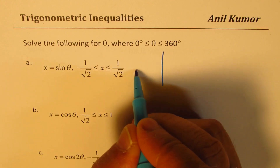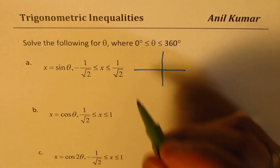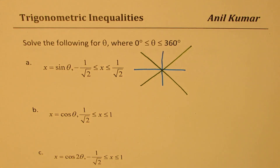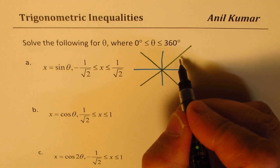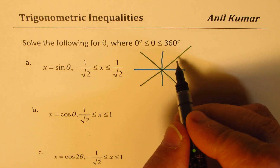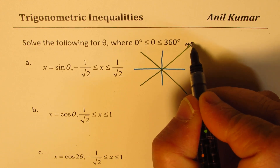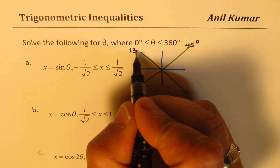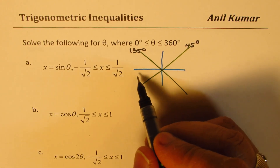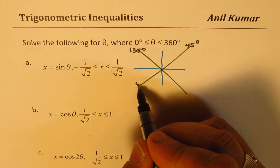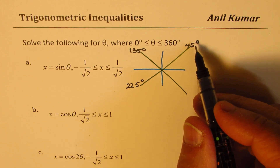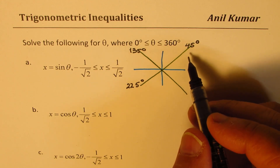So when sine is 1 over square root 2, the angle theta equals 45 degrees. In quadrant 2, it is 3 times 45, which is 135 degrees. In quadrant 3, it is 5 times 45, which is 225 degrees. And 7 times 45 gives 315 degrees — that is 45 less than 360 degrees.